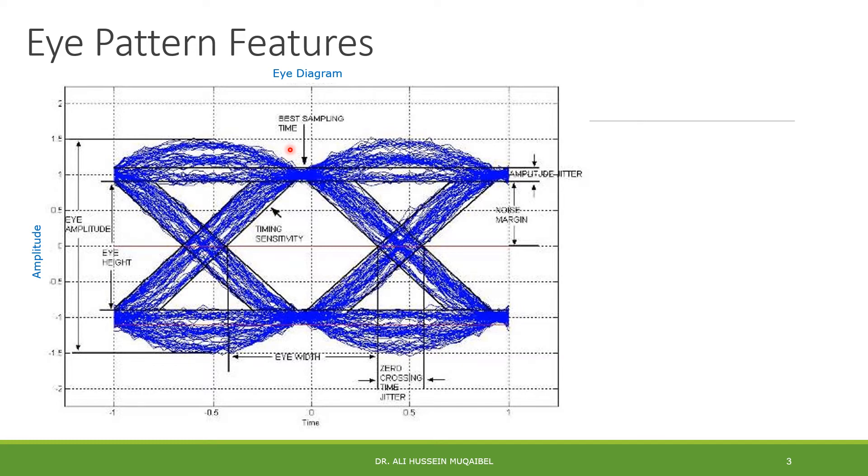So what are the features that you can read from this eye pattern? Why is this important? The eye pattern for a communication engineer is like the x-ray for a medical doctor. Now we will start with the time axis. This point in time is the best sampling time because here you can distinguish the positive from the negative. From this edge to this edge is called the eye width. While the range of zero crossings is called the zero crossing time jitter, because sometimes we cross the zero here, sometimes here, sometimes here, so we have a range of zero crossing.